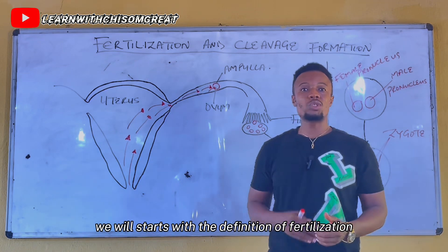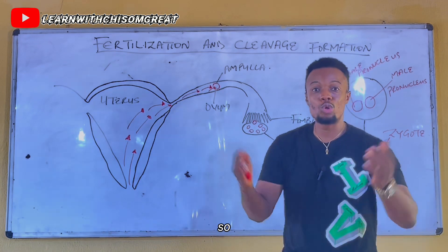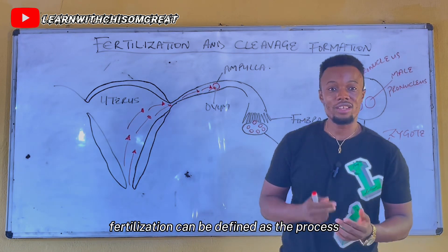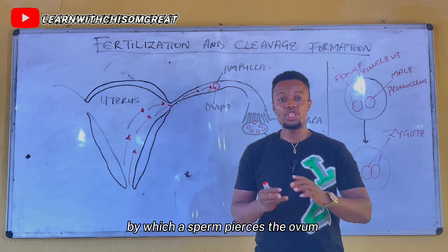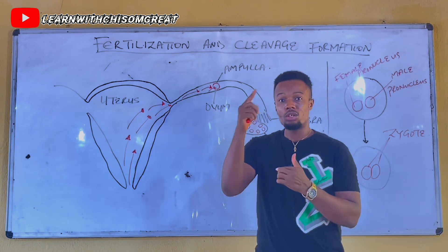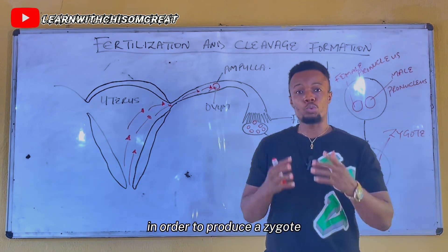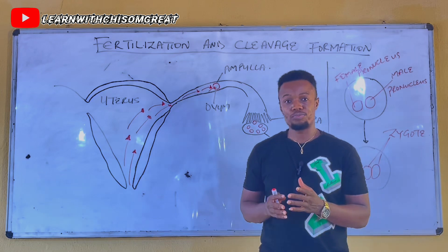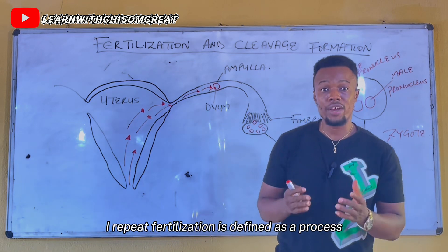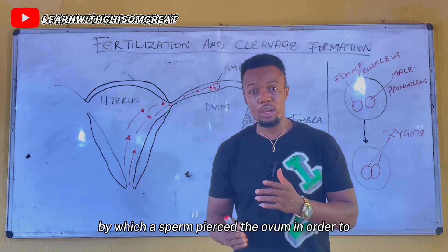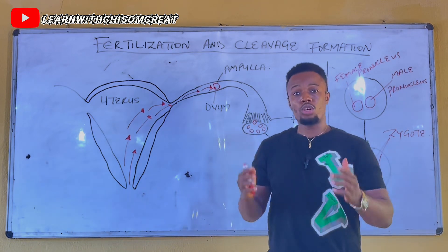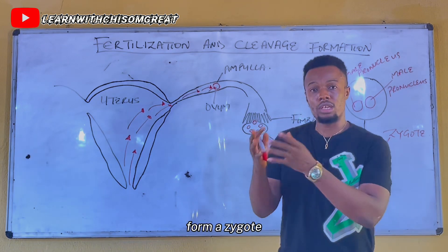We will start with the definition of fertilization. Fertilization can be defined as the process by which a sperm pierces the ovum in order to produce a zygote.